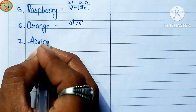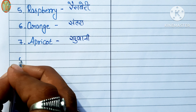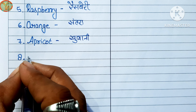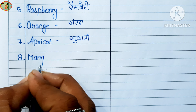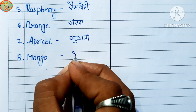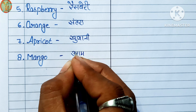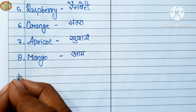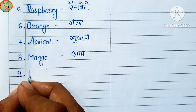Seventh number: apricot. Apricot means wani. Eighth number: mango. Mango means aam.